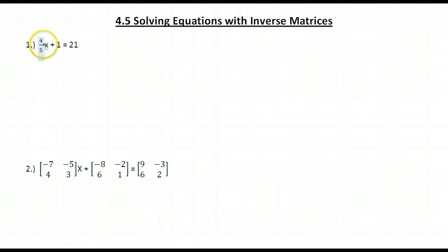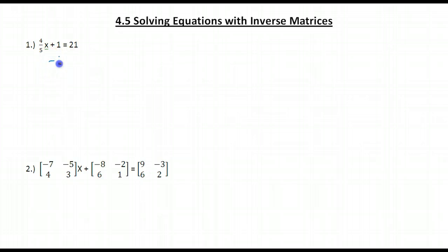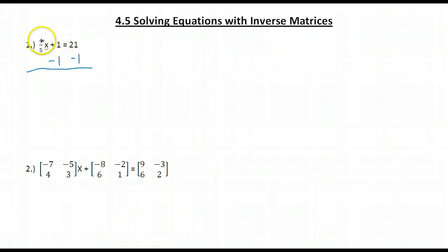In this problem, x is being multiplied by 4 fifths and 1 is being added to x. In order to solve for x, we need to undo those two things. To undo plus 1, we're going to subtract 1 from both sides of the equation. Plus 1 minus 1 gives me 0, the additive identity, and when I add 4 fifths x plus the identity, I get just 4 fifths x.